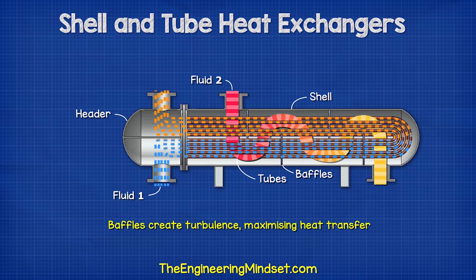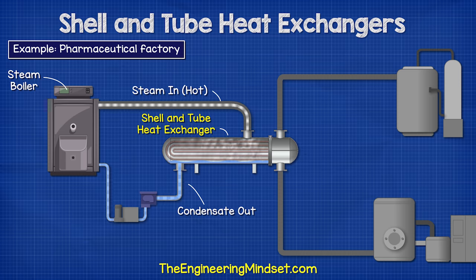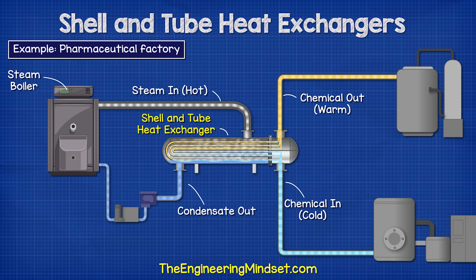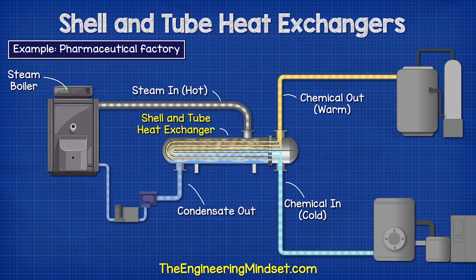For example, we might find this in a pharmaceutical factory with a boiler providing steam into the shell, which surrounds the tubes. A chemical product is then pumped through the tubes and absorbs the heat of the steam through the tube wall, so this product exits the heat exchanger much warmer. Meanwhile, the steam will start to condense into a liquid and flow back to the boiler to pick up more heat and repeat the cycle.